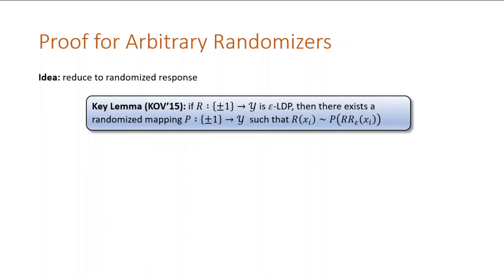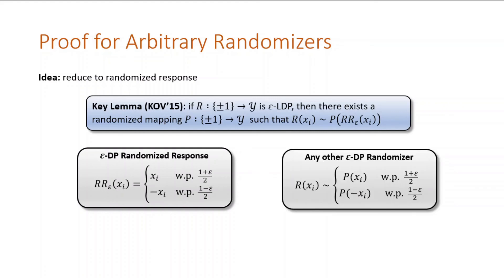To handle other randomizers, we will essentially reduce to randomized response. This is done by using the following lemma by Kairouz, Oh, and Viswanath. Any locally private randomizer can be expressed as a post-processing p of randomized response. Before, we just flipped the bit at some probability, but now, more generally, we will run p on the flipped bit. To attack randomized response, corrupt users send plus one. In the more general case, corrupted users will send p of plus one. The proof directly carries over.